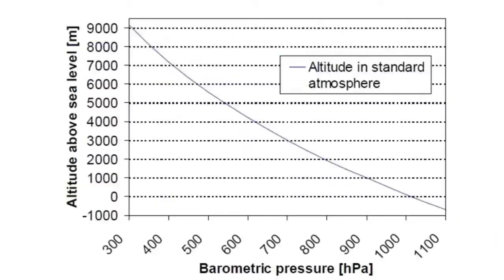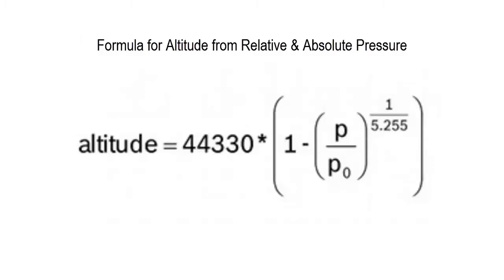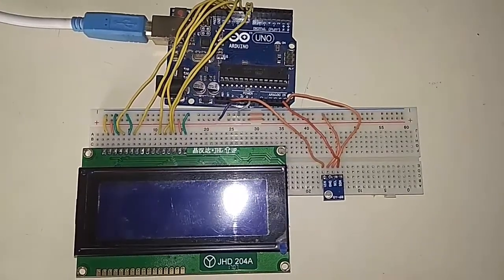This shows the relationship between height and barometric pressure in hPa (hectopascal). With rising altitude the pressure also starts rising. This is the formula for calculating altitude on the basis of relative pressure and absolute pressure: altitude = 4330 × (1 − (P / P₀)^(1/5.255)).